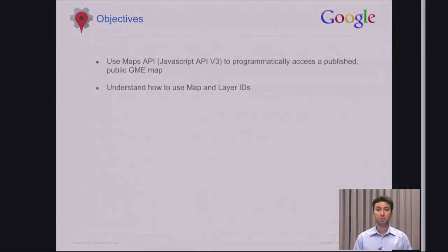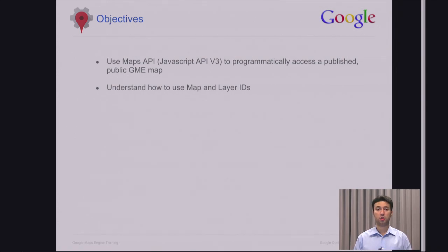To keep this discussion simple, we are only going to focus on accessing a public map — in other words, a map that has been shared with a public access list. Accessing a map shared with a private access list requires us to write the OAuth component, and we will cover that in a different module.